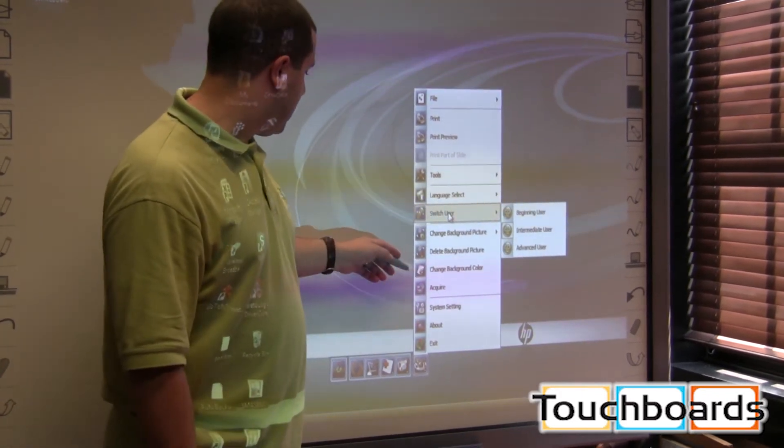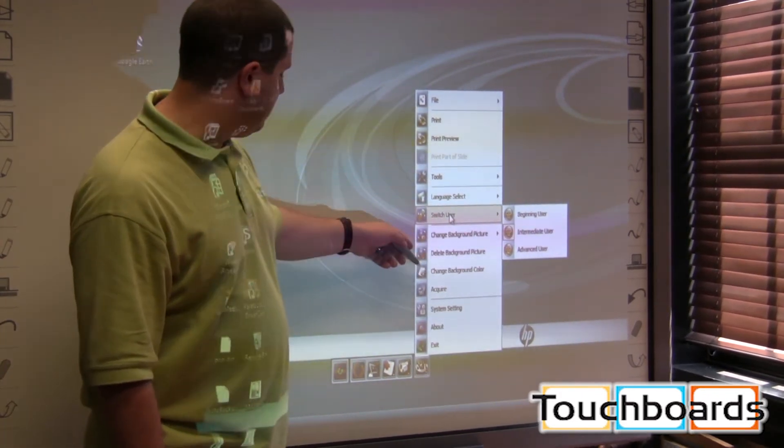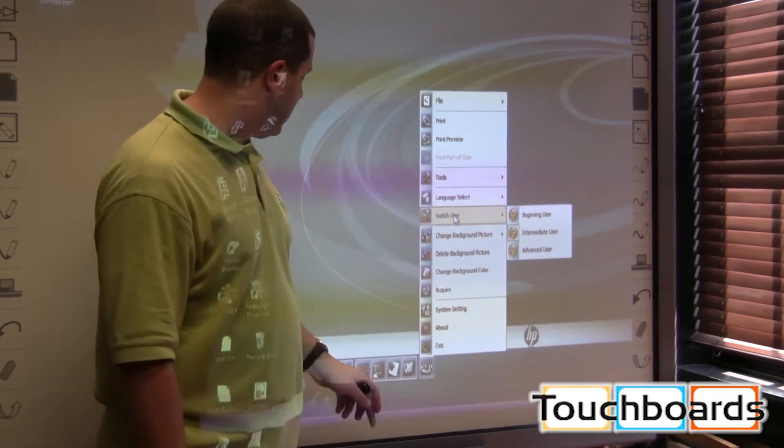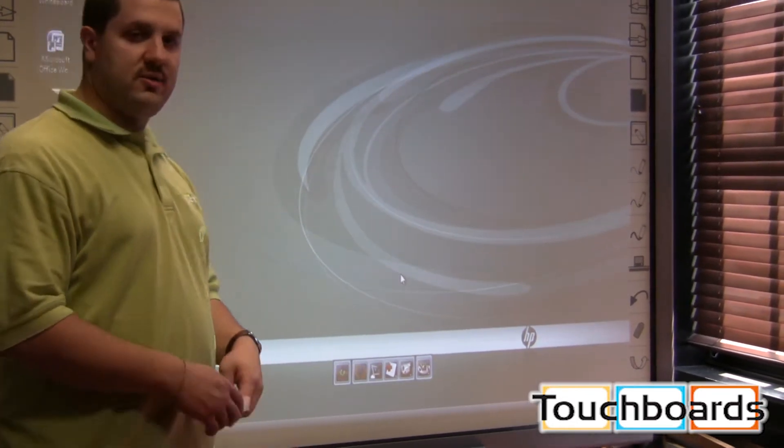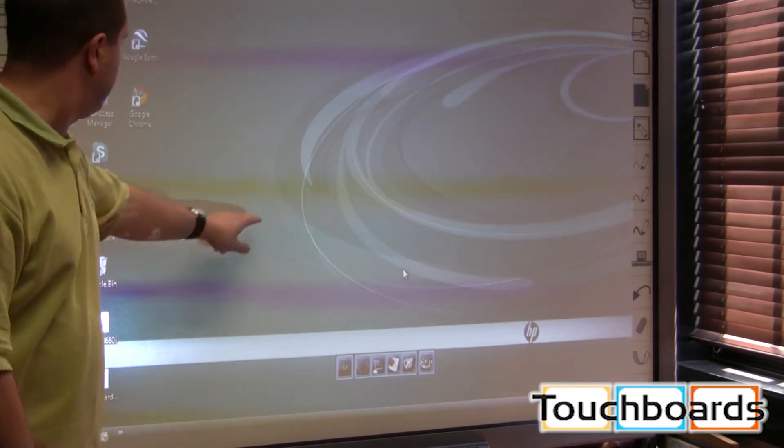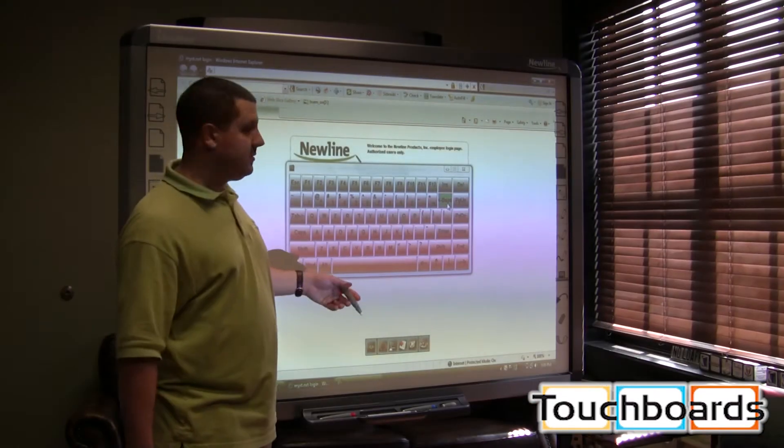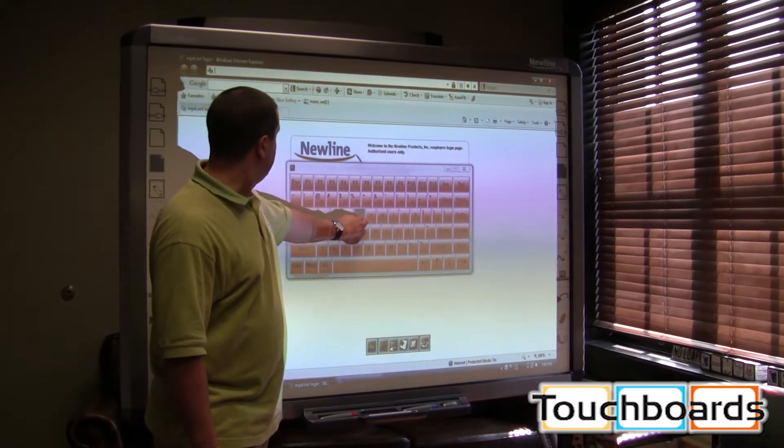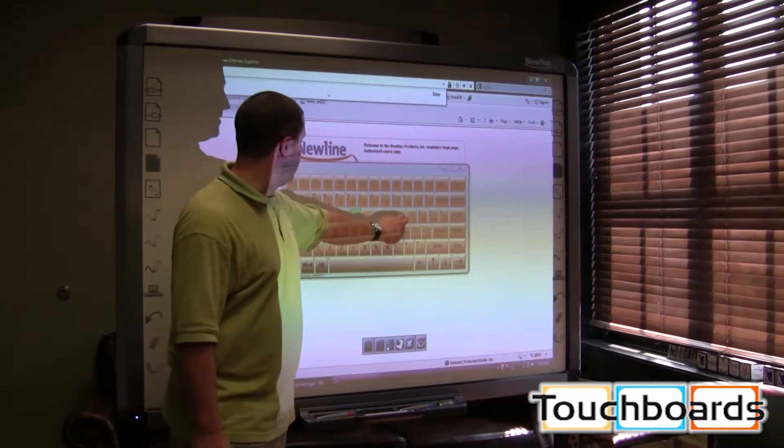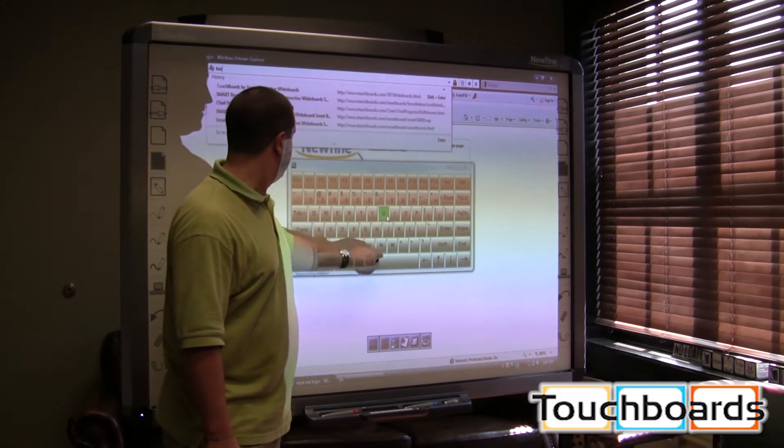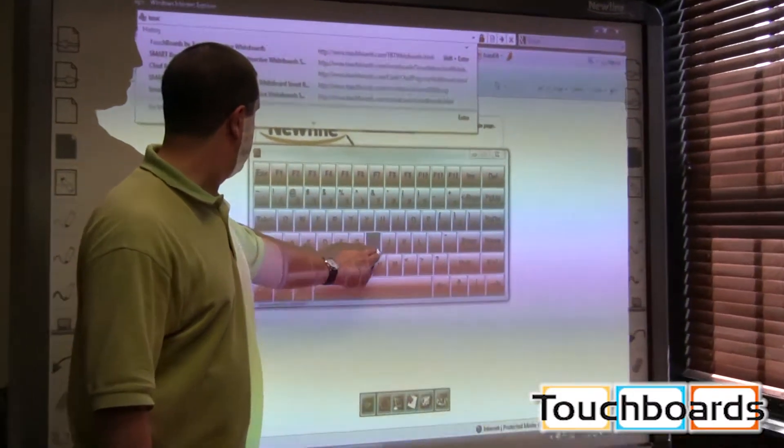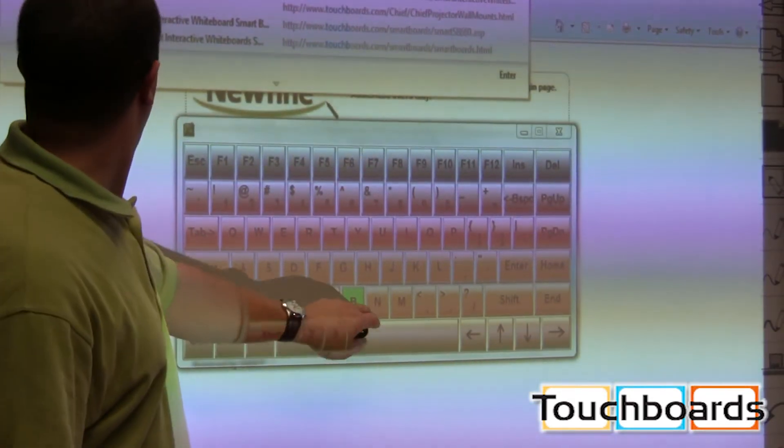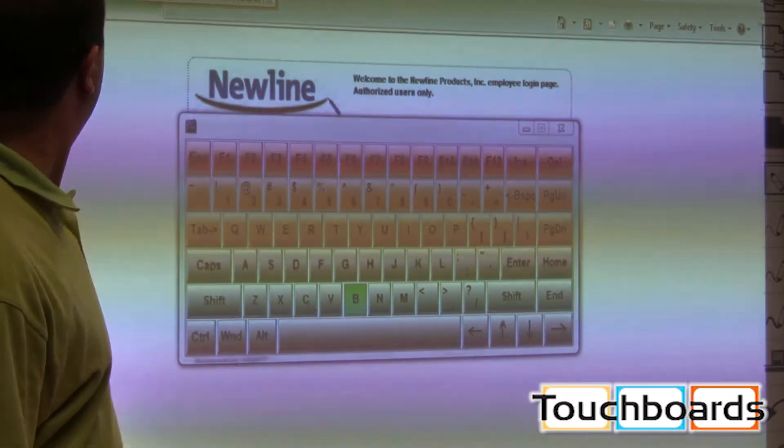You can change backgrounds, bring in images, and even close out of the software right there. Right now, we're in mouse mode. We can use the stylus pen or your finger. I'm going to go to touchboards.com. You can see I can use my finger to type that in.